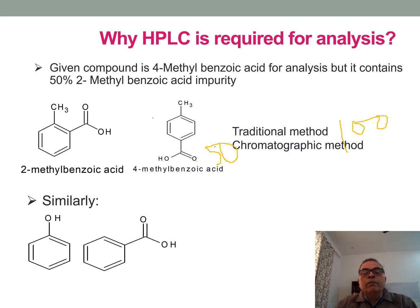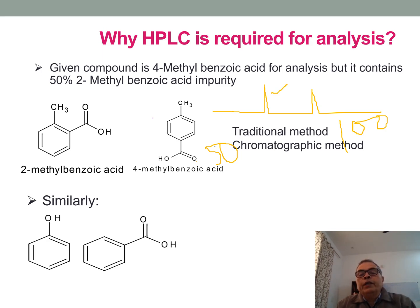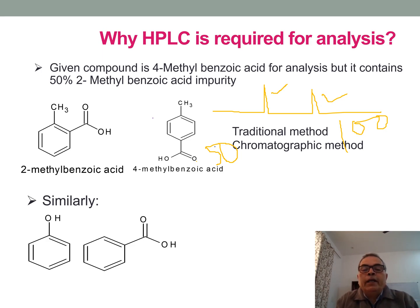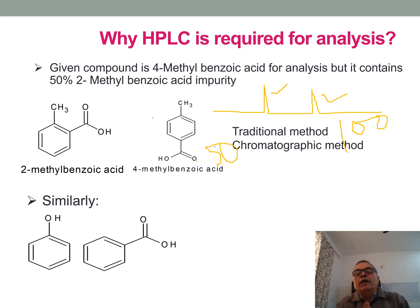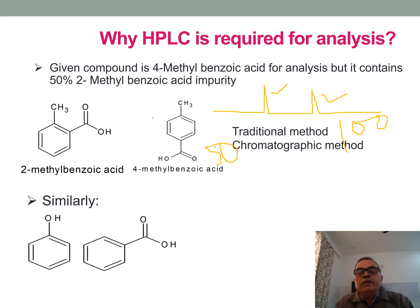HPLC gives 2 peaks — one peak due to 2-methylbenzoic acid and a second peak due to 4-methylbenzoic acid. In the second set of samples, phenol is the analyte, and it also contains benzoic acid as an impurity. When analyzed by traditional chemical method or by UV, it will give a result of about 100%.